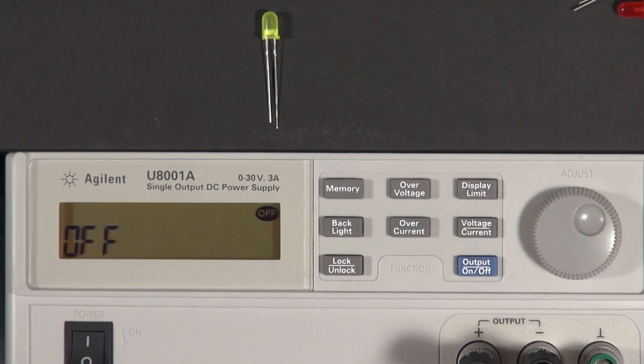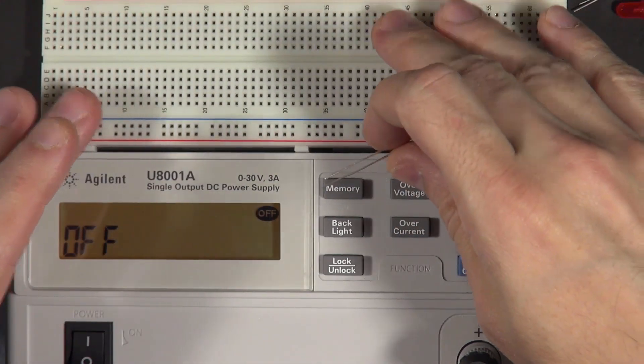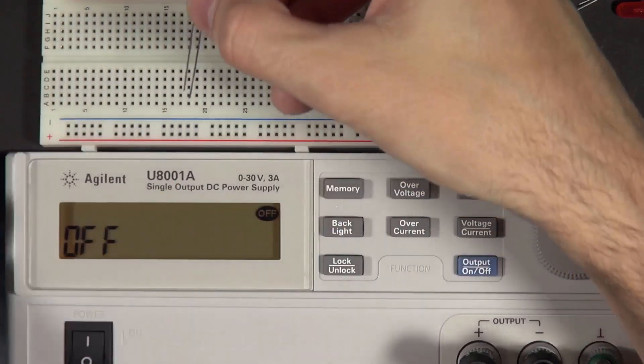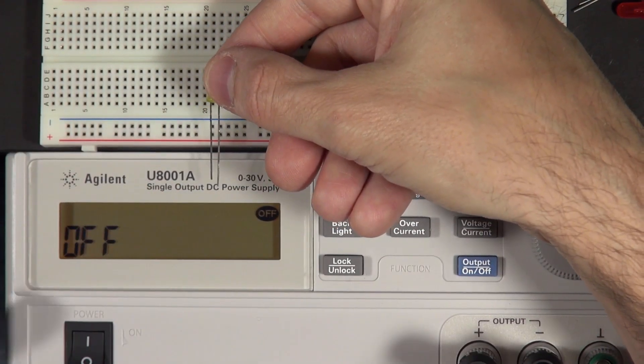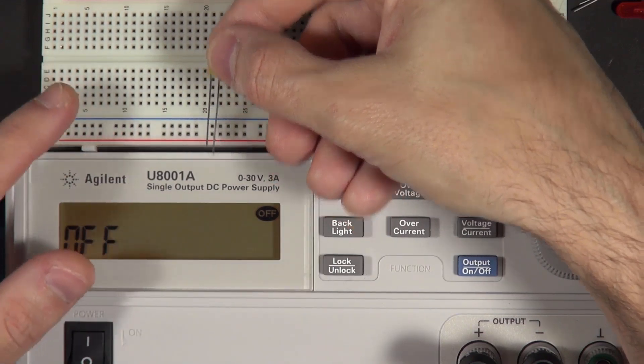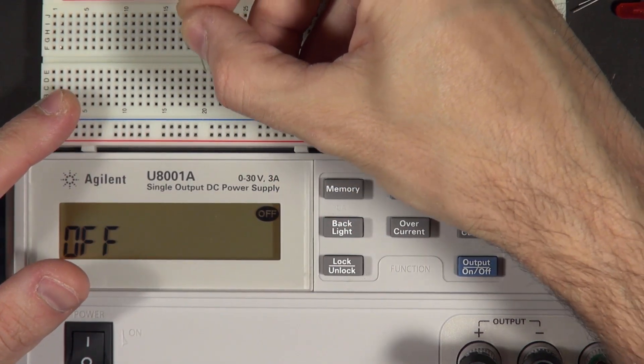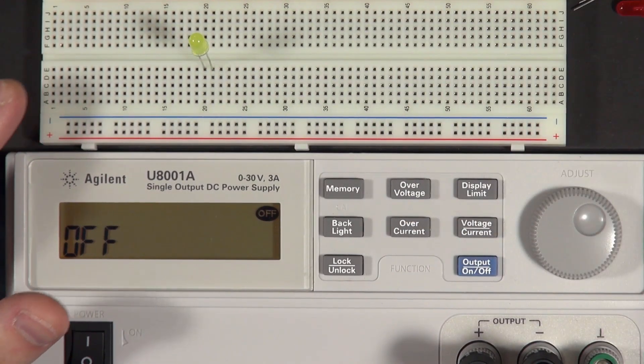So we can try hooking this up. I have a breadboard here that we can use to hook this up on. And I'll take the LED and I have it oriented here so that the cathode is on the left side. So that's the side that we hook to the negative, and the anode is on the right. So I'll just insert it in this breadboard.